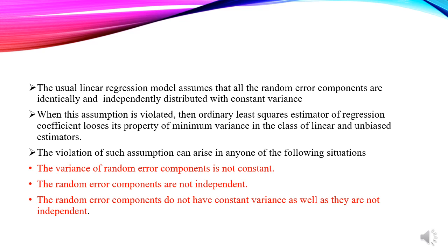All the random error components are identically and independently distributed with constant variance. This is the assumption whose violation affects the regression coefficients, which lose their property of minimum variance in the class of linear unbiased estimators — the Best Linear Unbiased Estimator (BLUE) property.